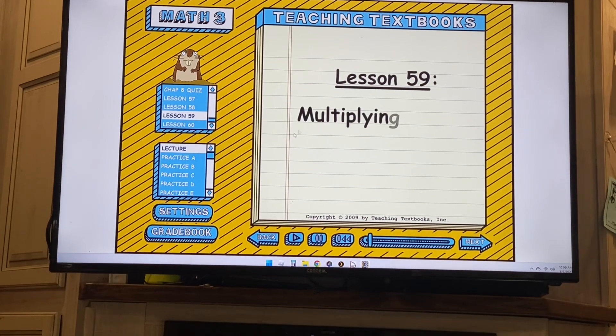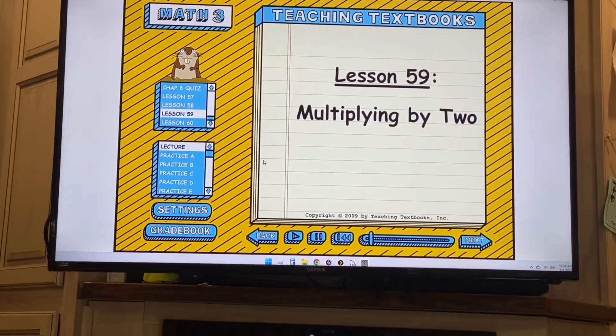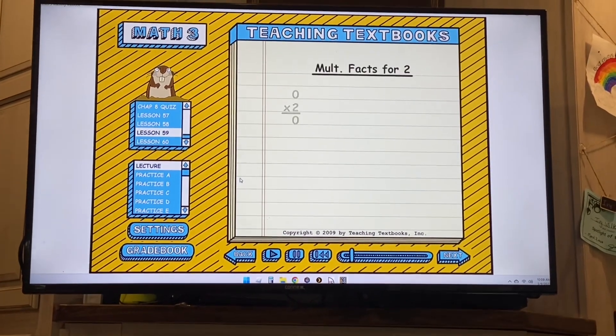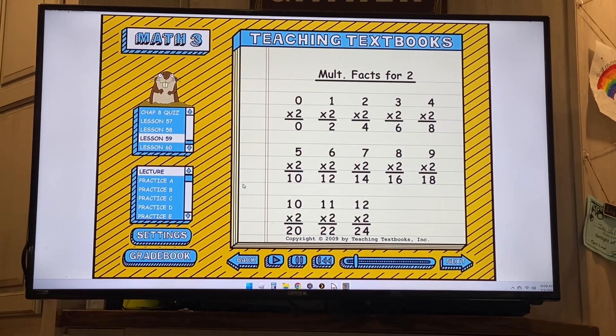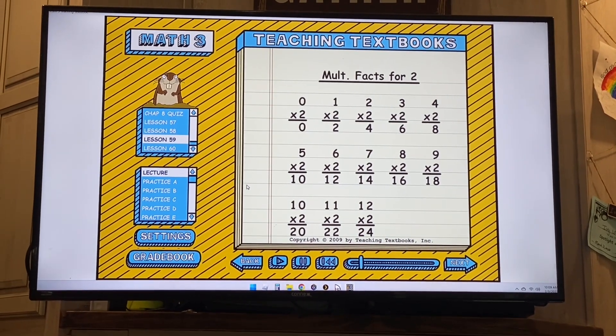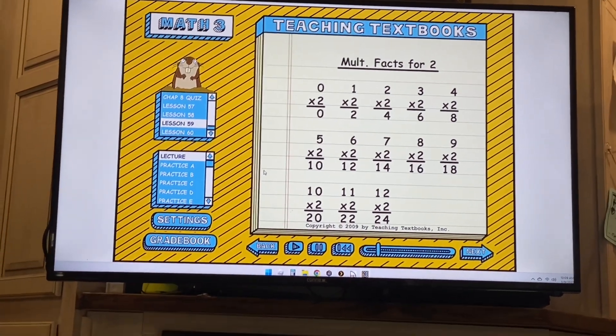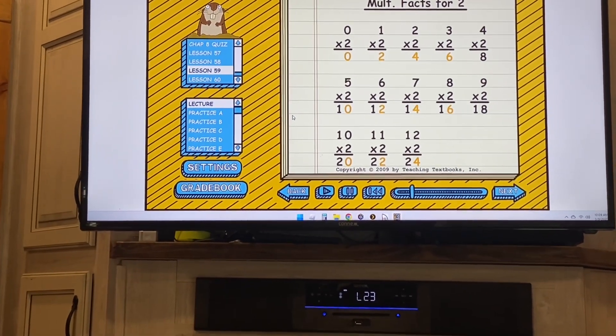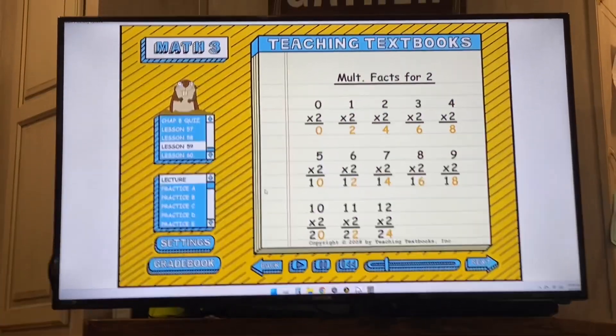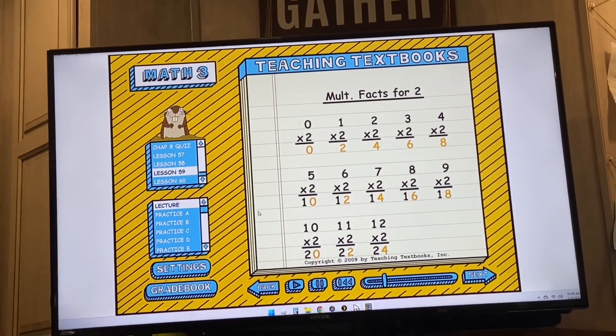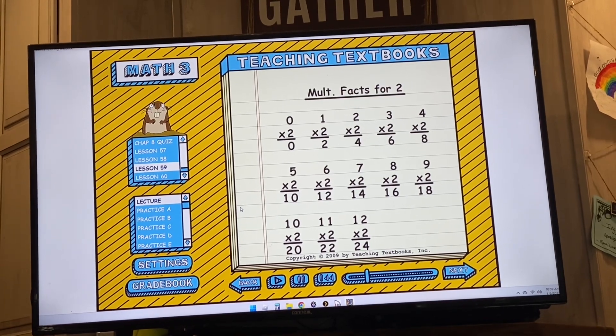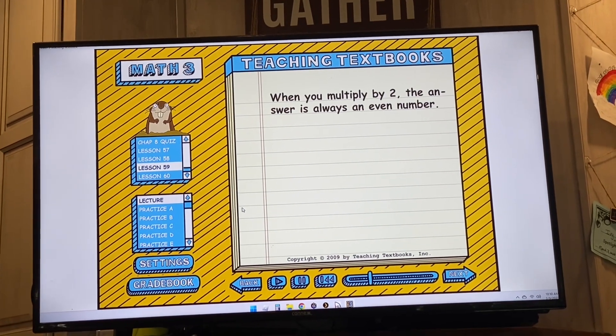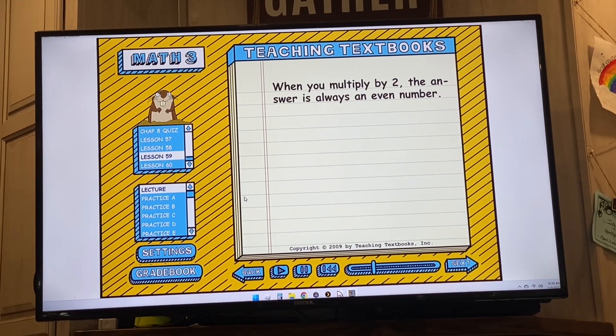Lesson 59, multiplying by two. Today we're going to talk about multiplying by two. We'll start with all the facts, let me show you those. If you look closely you'll see that every answer to these facts ends in either zero, two, four, six or eight. All of the answers have one of those digits in their ones place and there's a good reason for that. It turns out that when you multiply a whole number by two the answer is always an even number. And remember, even numbers have to have a zero, two, four, six or eight in their ones place.